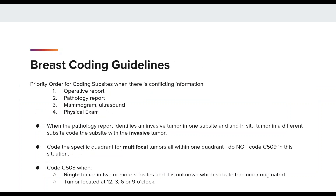The breast coding guidelines provide a priority order for coding subsites when there is conflicting information. The first priority is given to the operative report, followed by the PATH report, the mammogram, ultrasound, and then the physical exam. Further coding guidelines explain when a PATH report identifies an invasive tumor in one subsite and an in situ tumor in another, you are to code the subsite of the invasive. If multifocal tumors are all within one quadrant, you code to that specific quadrant. Do not code to breast NOS in this situation.